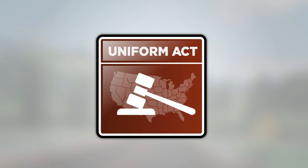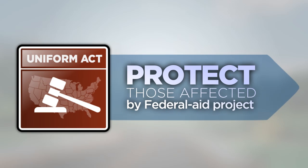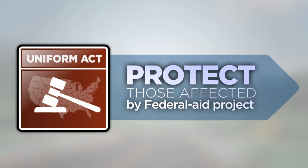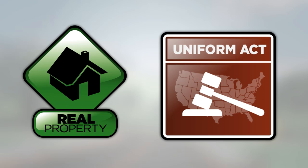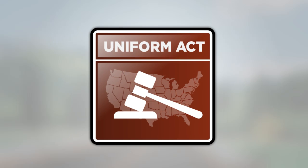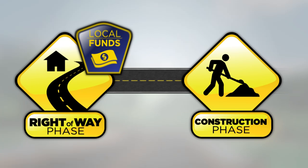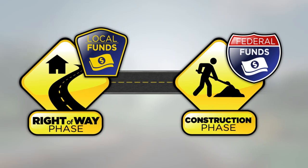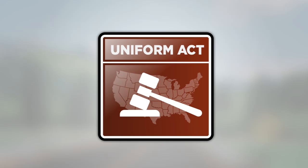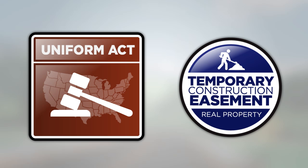The Uniform Act and other Federal right-of-way requirements are in place to protect and treat fairly those who are affected by a Federal-aid project. When you need to acquire property or certain rights or interest to property in order to build your project, you must comply with the Uniform Act. The Uniform Act requirements apply when Federal-aid is used for any phase of a project. For example, if you use local funds only for right-of-way acquisition and plan to use Federal-aid only for the construction phase, you must still comply with the Uniform Act to be eligible to receive these Federal funds. The Uniform Act requirements also apply when only a temporary easement is necessary for constructing a project.